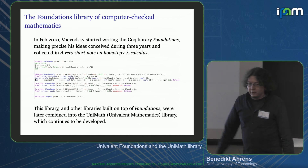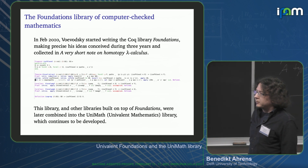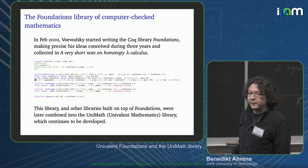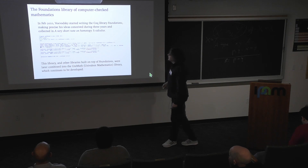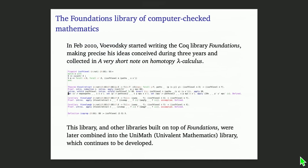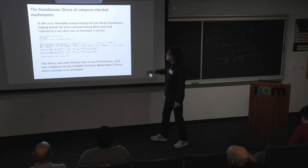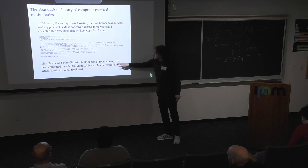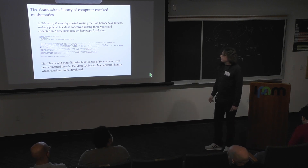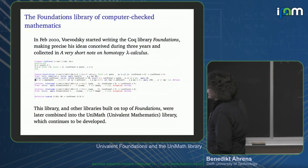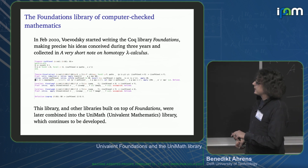Voevodsky thought about these foundations of mathematics, motivated by computer proof assistants. Here I have an excerpt of Voevodsky's Coq library that he started writing in 2010, where he develops univalent foundations not just conceptually but also syntactically, including the definition of homotopy levels. His library, called 'Foundations,' along with other libraries built on top of it, were later combined into what is now called the UniMath library of univalent mathematics.